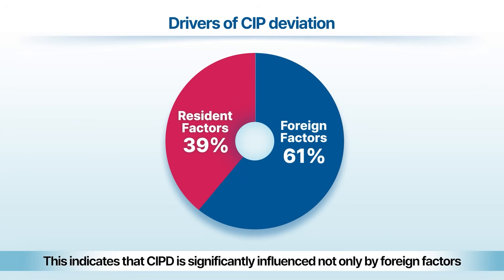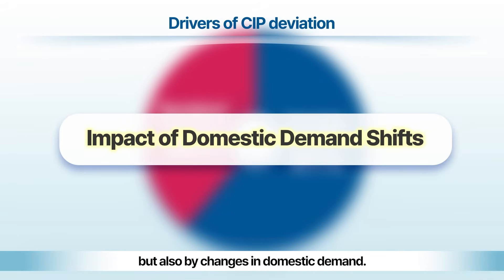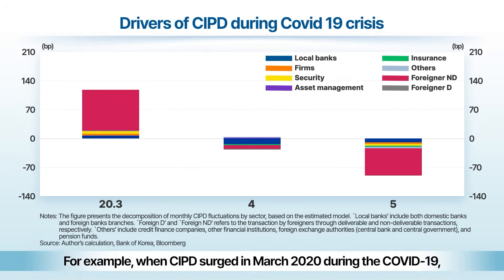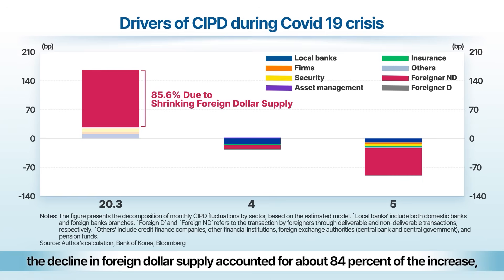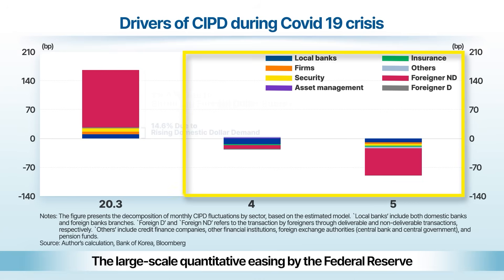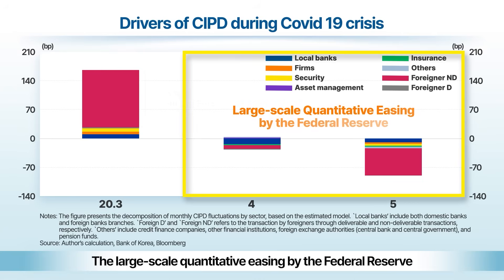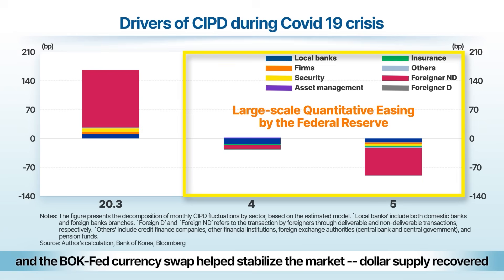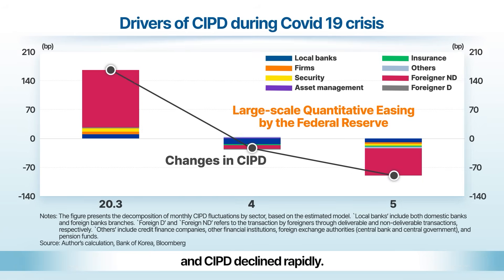This indicates that CIPD is significantly influenced not only by foreign factors, but also by changes in domestic demand. For example, when CIPD surged in March 2020 during COVID-19, the decline in foreign dollar supply accounted for about 84% of the increase, while the rise in dollar demand from domestic agents contributed around 15%. The large-scale quantitative easing by the Federal Reserve and the BOK-Fed currency swap helped stabilize the market, dollar supply recovered, and CIPD declined rapidly.